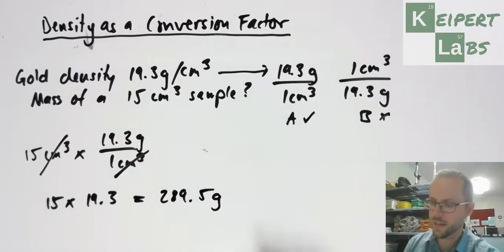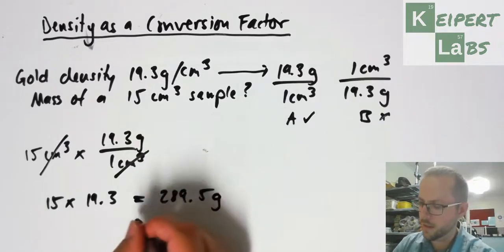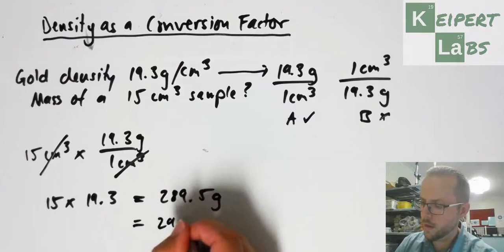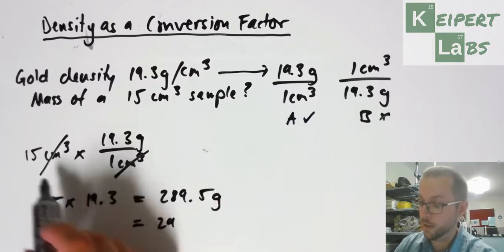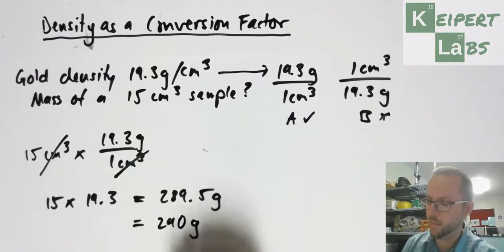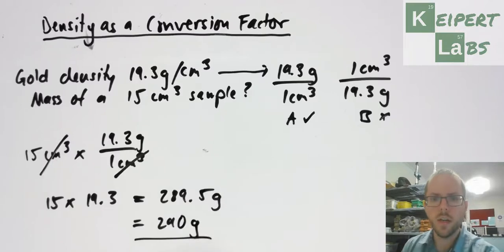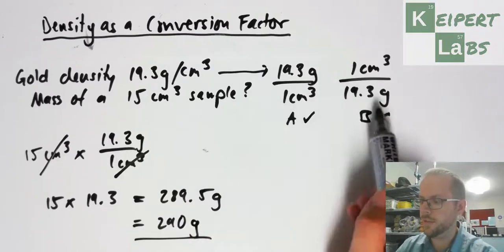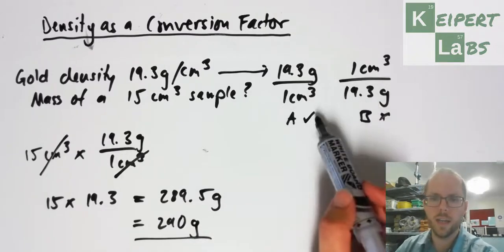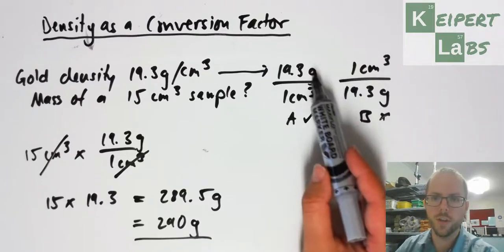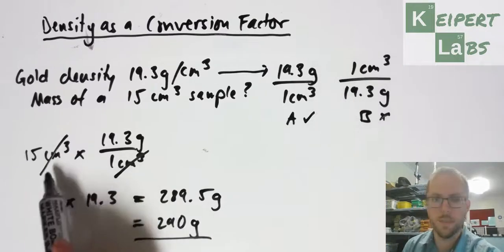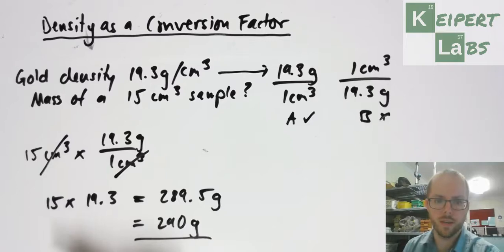I'm going to round to significant figures - actually, I'm going to go with two significant figures, to 290 grams. I've set up a conversion factor, picked the one that has the units I want over the units that I have, and multiplied that by the number I've been given.